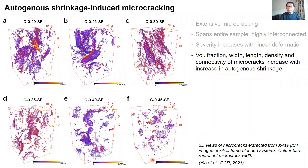Therefore, concretes that are strongest, the densest, with lowest water-binder ratios, and containing supplementary cementitious materials, will experience the greatest amount of microcracking. This is a concern because we do not want the advantages of low water-binder ratio and SCMs to be diluted or negated by the presence of cracks. Here we have a series of three-dimensional views of microcracks from X-ray CT images of concrete containing silica fume at different water-binder ratios, ranging from 0.2 to 0.45. The system with the lowest water-binder ratio experienced the most extensive microcracking. Autogenous shrinkage-induced microcracks are larger in size, more densely distributed, and more interconnected compared to external drying-induced microcracks.